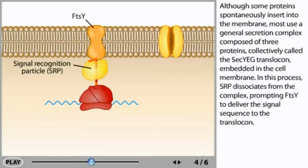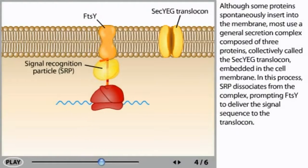Although some proteins spontaneously insert into the membrane, most use a general secretion complex composed of three proteins, collectively called the SecYEG translocon, embedded in the cell membrane.